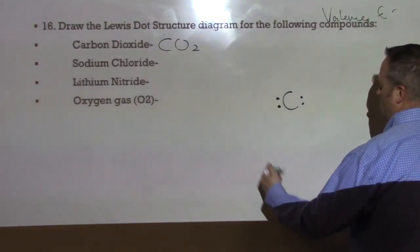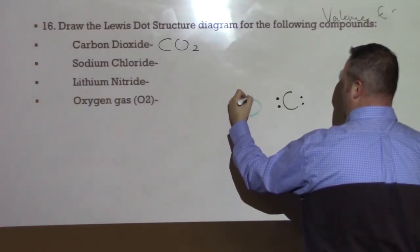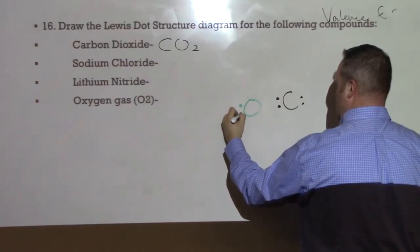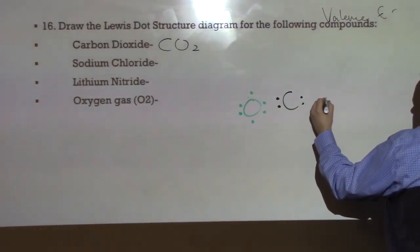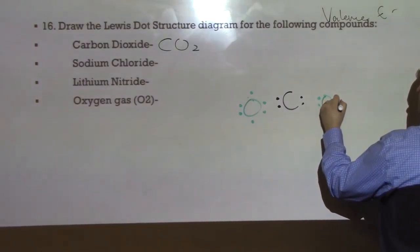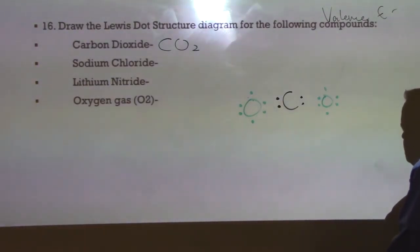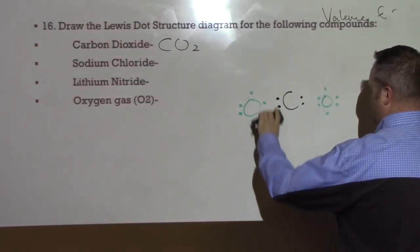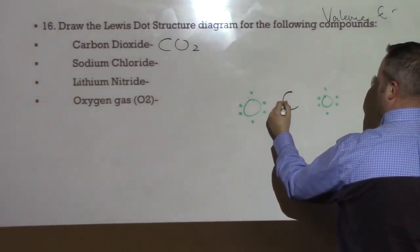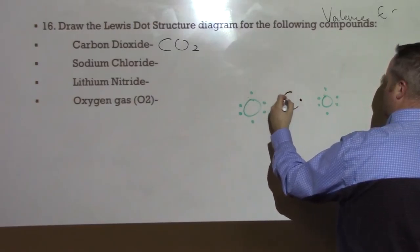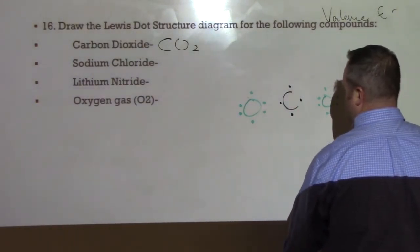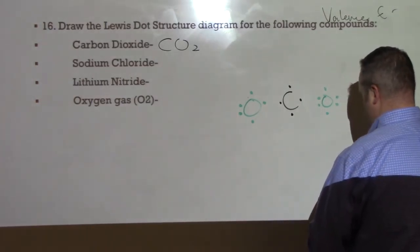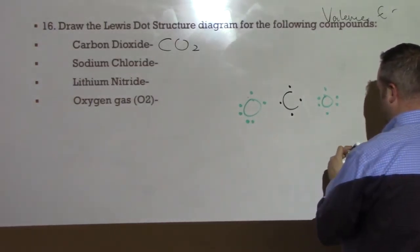So, instead of having our dots going around the outside, we're going to kind of draw our dots right here. Okay? Now, that's fine because you still have 4 valence electrons. Remember that carbon is in group 14. That's why it has 4. Now, I'm going to draw my 2 oxygen atoms. So, over here, I have 6 valence electrons and then over here, I have 6 valence electrons. I'm actually going to move my dots around a little bit to make this easier to illustrate.